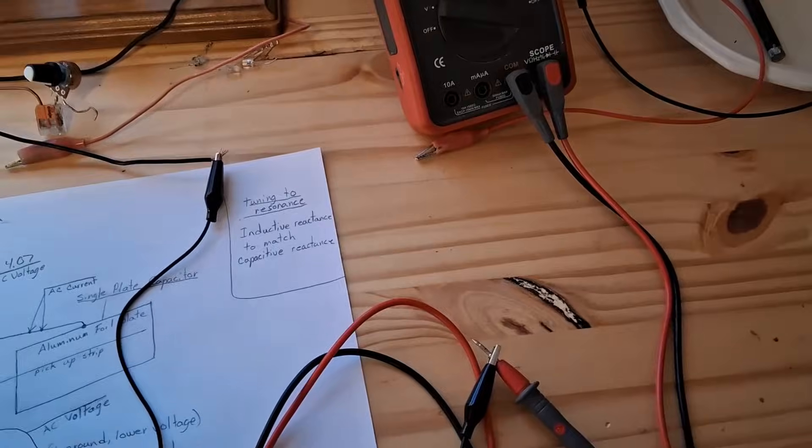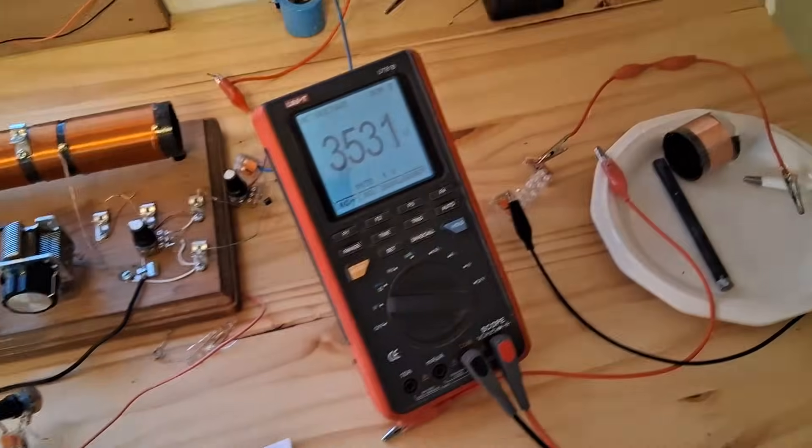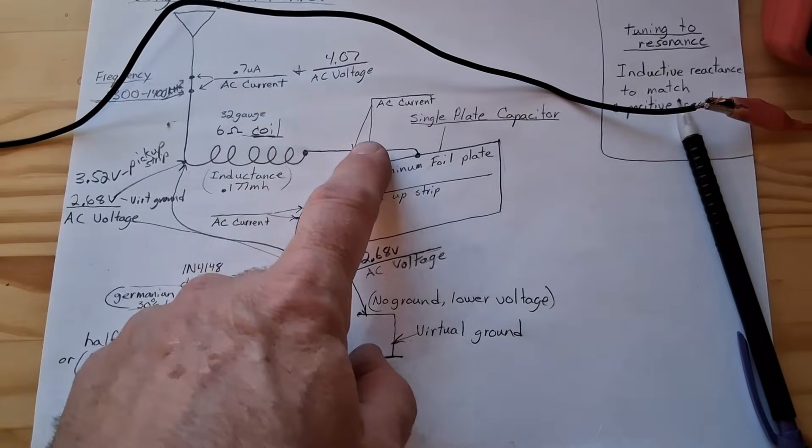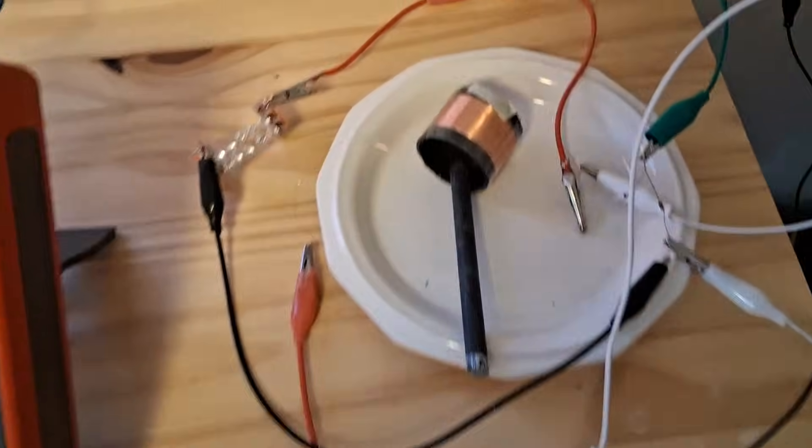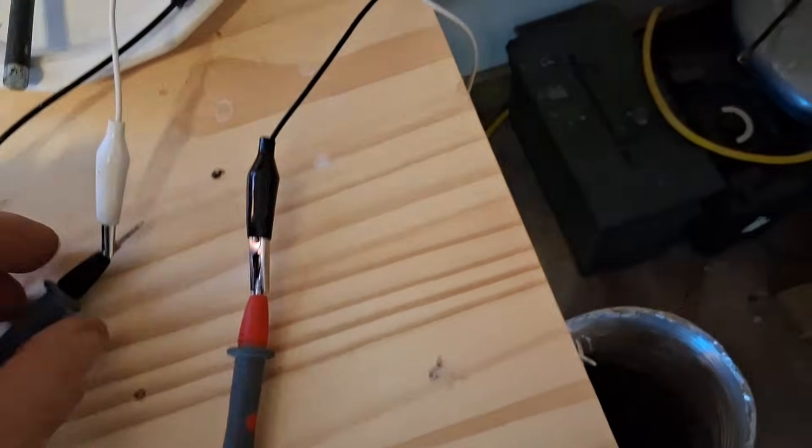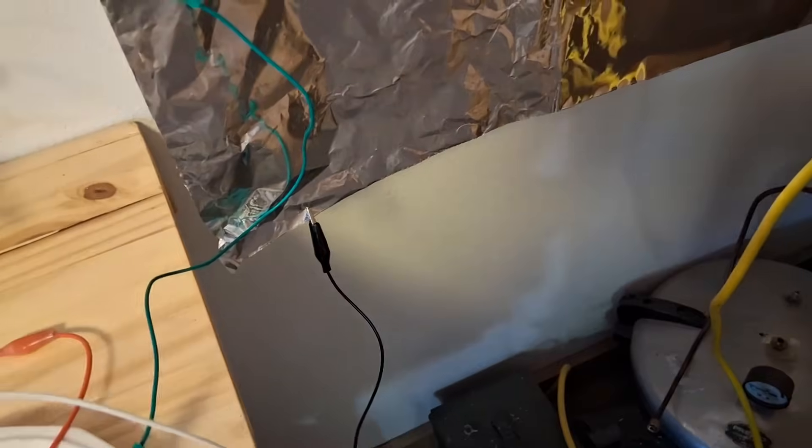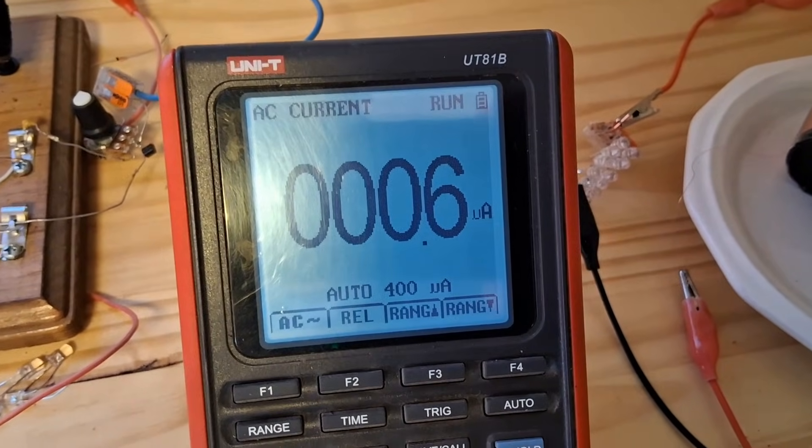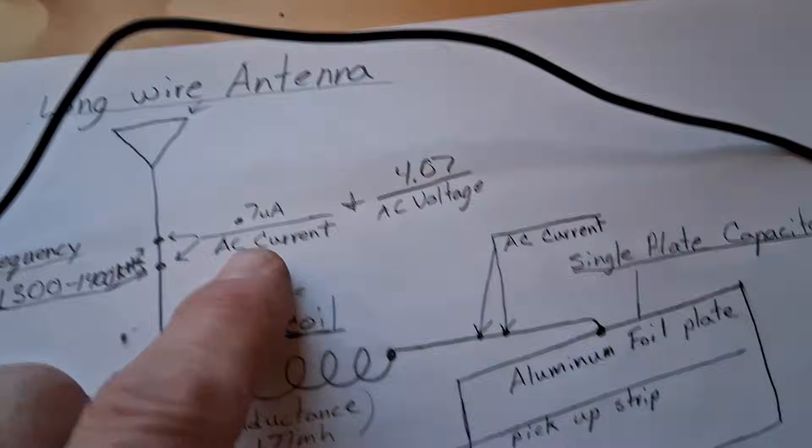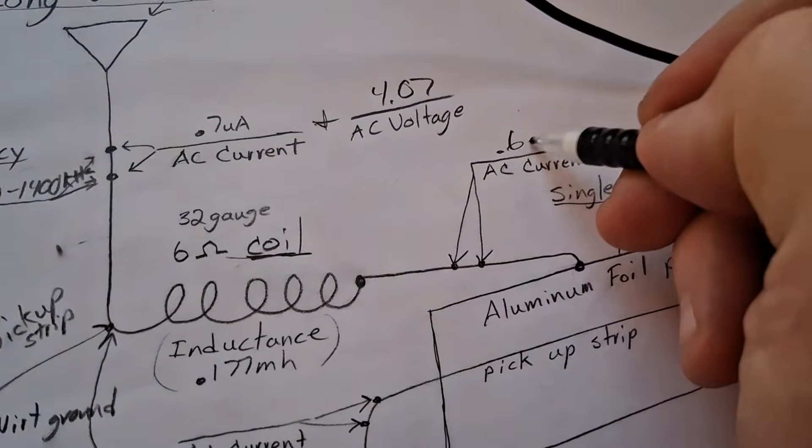Now I'm going to check the current in different spots along here. Probably done with the AC voltage right now. Now I got it set up just to test the AC current between the coil and the aluminum foil plate, which of course made the LEDs go out. But this is coming off the coil here to the plate, aluminum foil plate, and we're at 0.6 microamps. So we lost a little bit from what we had over here. I'll write that in, 0.6 microamps.